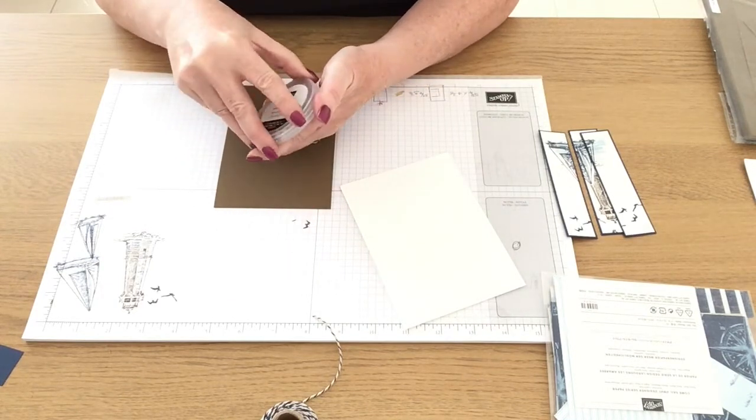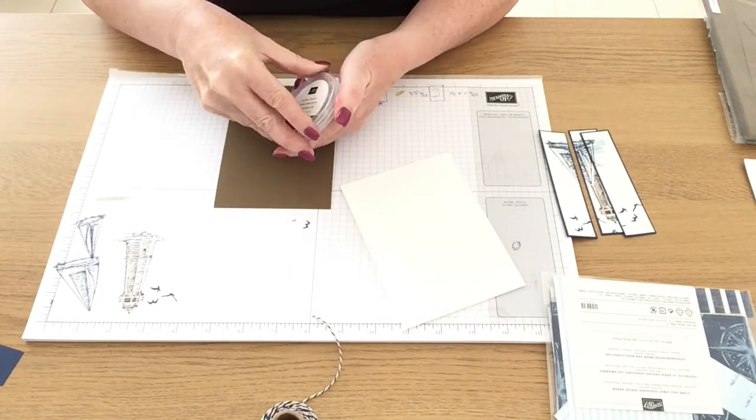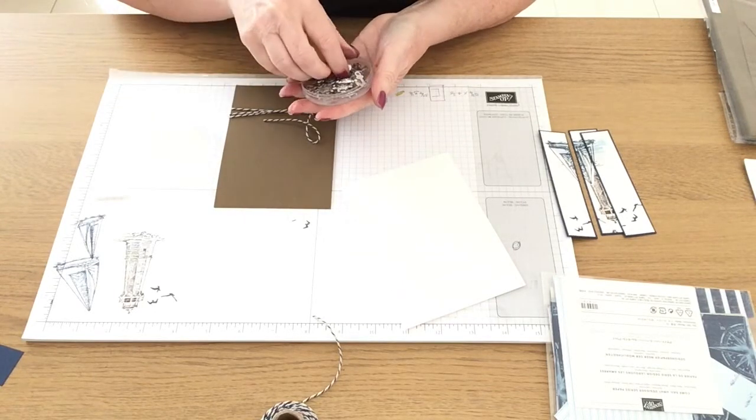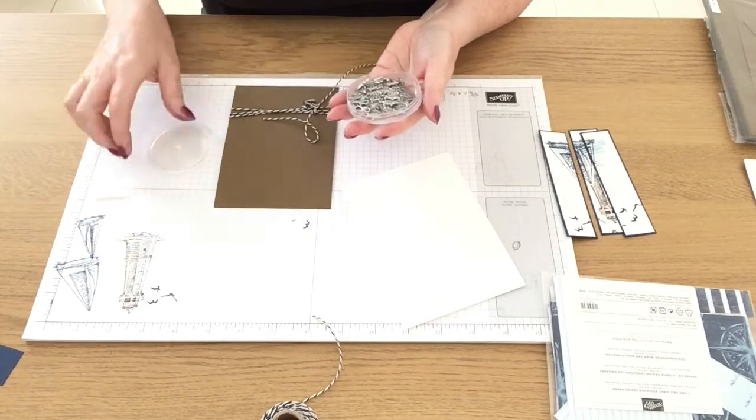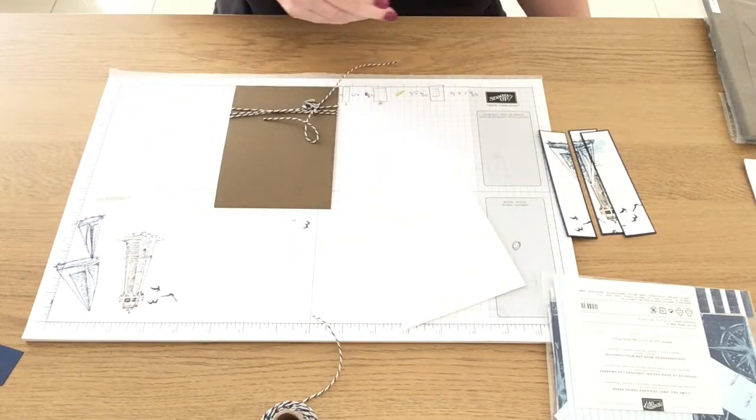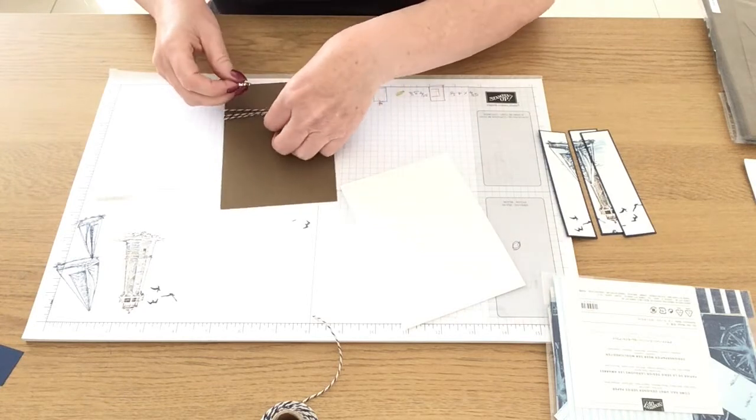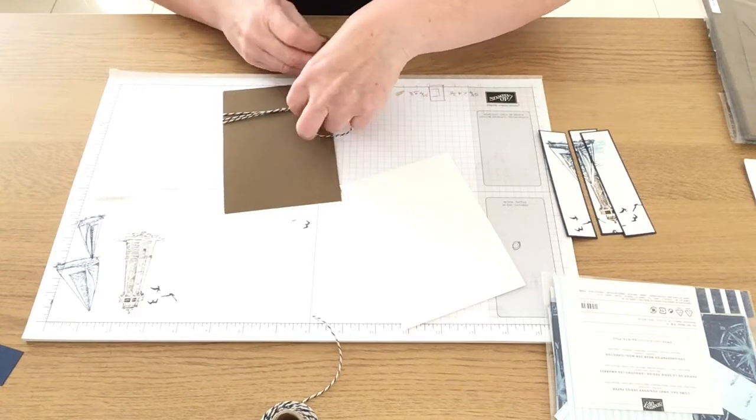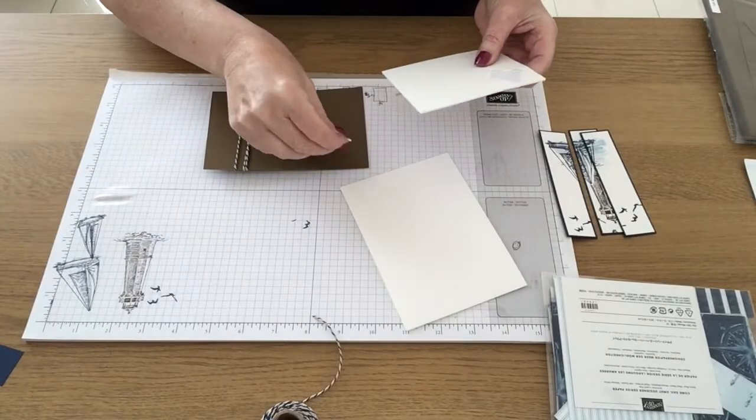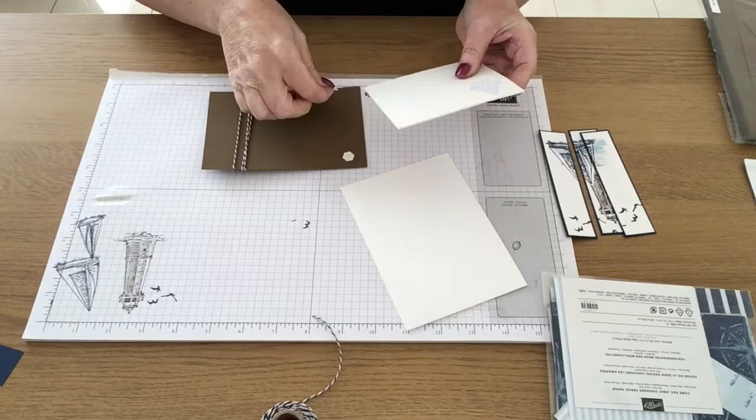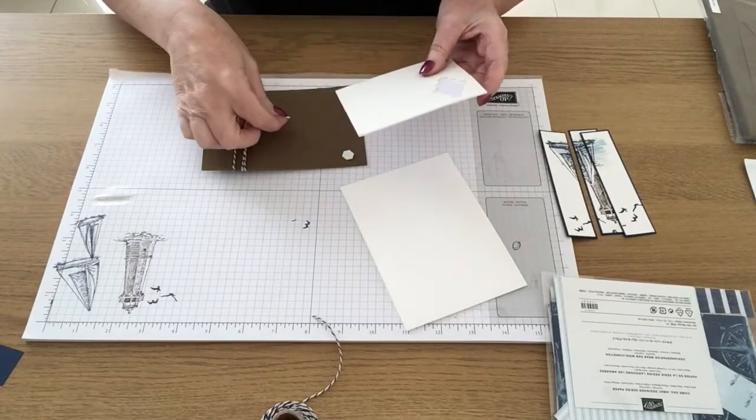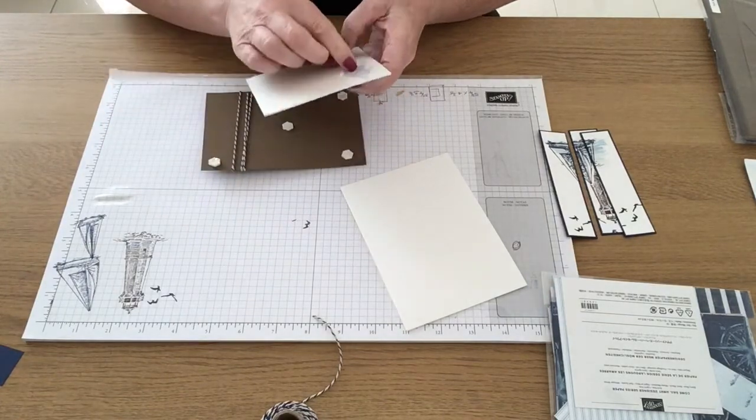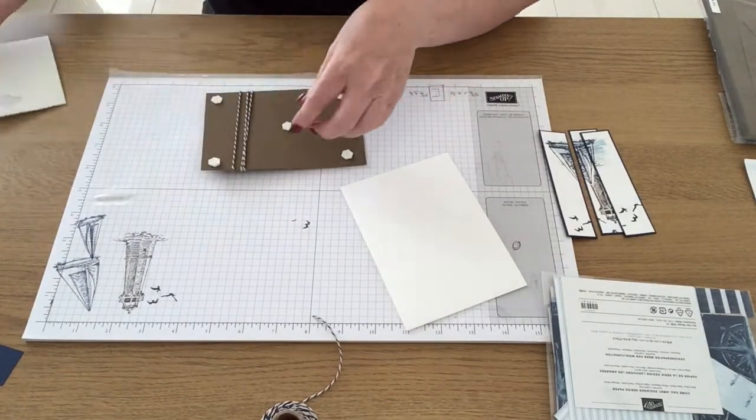Just before I tie the bow in the twine I'm going to use some of the trim kits that are available in this sailing home suite and I'm just going to use one of the little anchors. They do have a little hole in the top so it does make it easy to thread your twine through. I'm going to apply some of the bigger dimensionals to the back of this piece of soft suede and then I'm going to stick it.